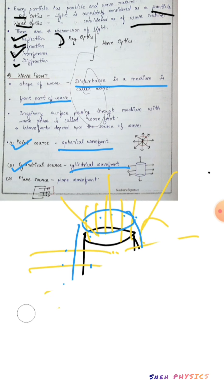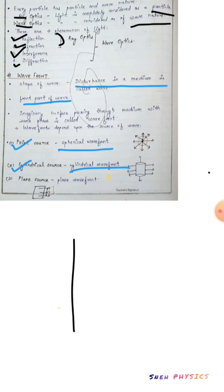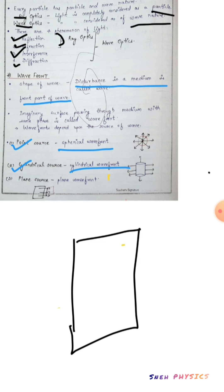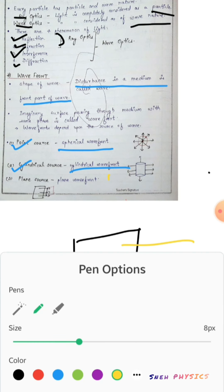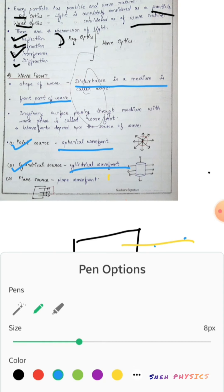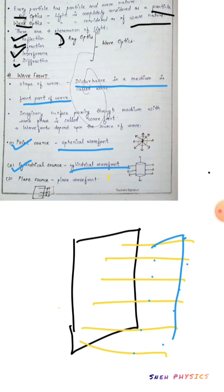Now let's consider another shape which will be useful to study this chapter — that is the plane source. This is our plane source. When we pass light from this plane sheet, we pass straight lines. When we take points from these lines and join those points, the wavefront will also be a plane wavefront. This means that a plane source gives a plane wavefront.